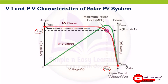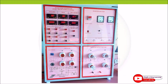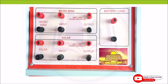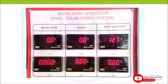Now let us see the experimental setup. This is the module where we can measure and observe the readings. Here is the solar terminal where we connect the solar cable — these are the solar input terminals. This is the positive terminal and this is the negative terminal. In this terminal we connect the rheostat, and here we obtain the solar voltage and current. Using this display, we can observe the voltage and current.